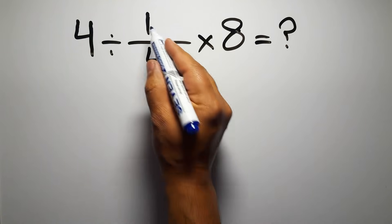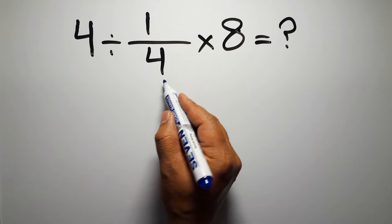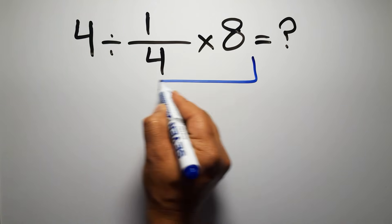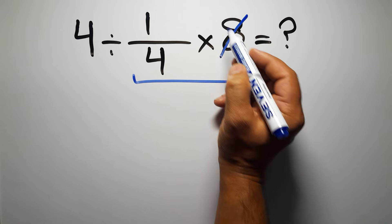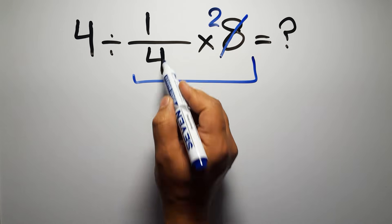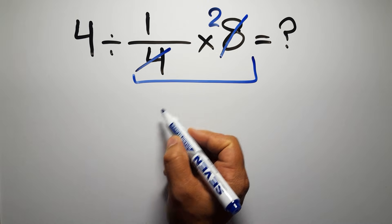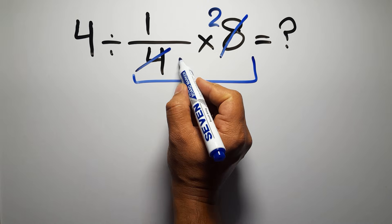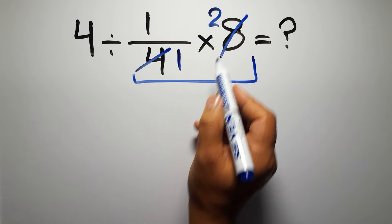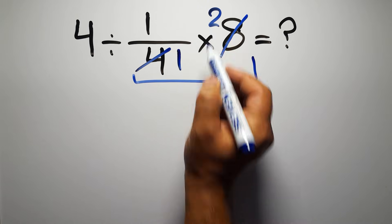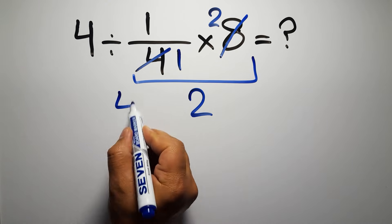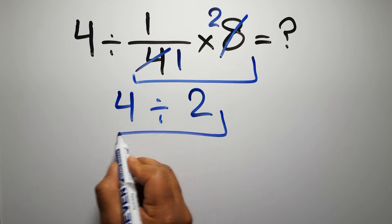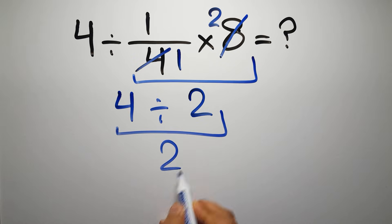First, we do this multiplication: 1 over 4 times 8. 8 divided by 4 gives us 2, and 4 divided by 4 equals 1. So here we have just 2. And 4 divided by 2 equals 2. But this answer is not correct.